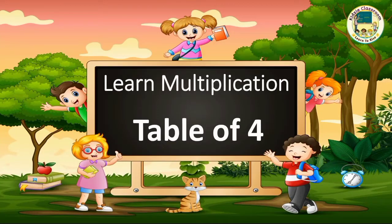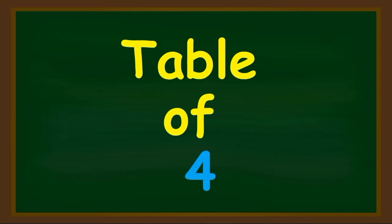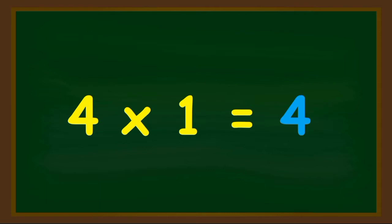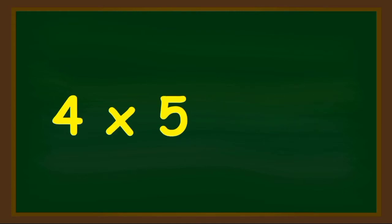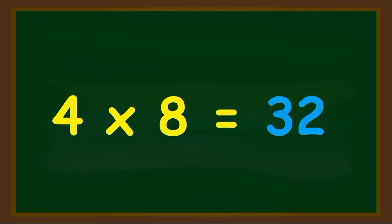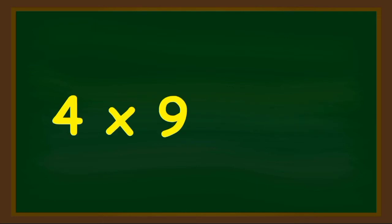Hi kids, today we will learn the multiplication table of four. So let's learn it. Four ones are four, four twos are eight, four threes are twelve, four fours are sixteen, four fives are twenty, four sixes are twenty-four, four sevens are twenty-eight, four eights are thirty-two, four nines are thirty-six, four tens are forty.